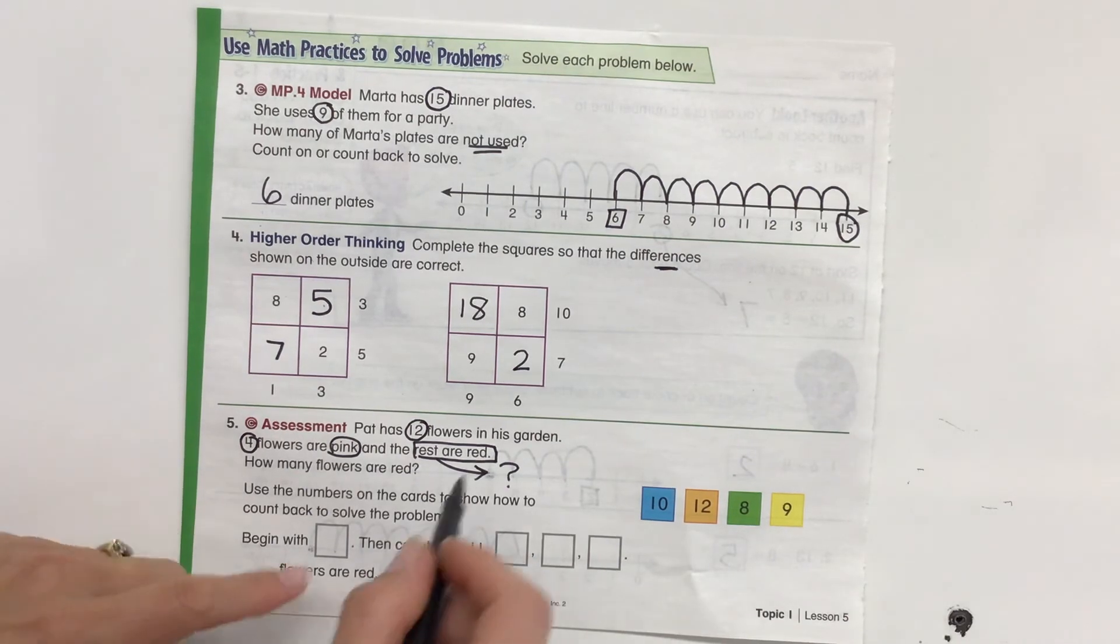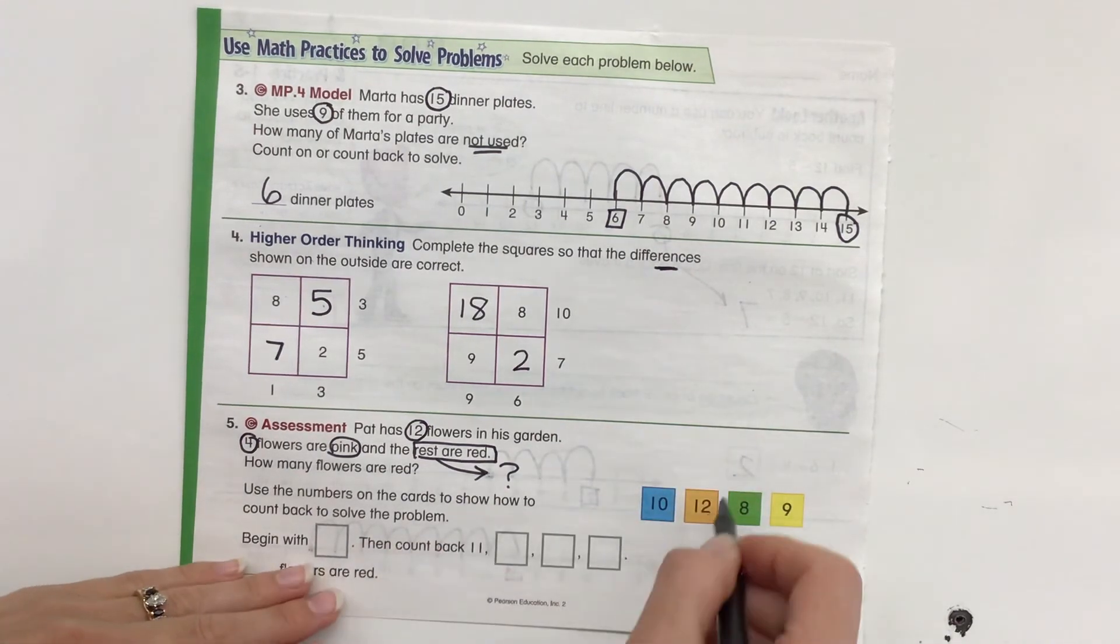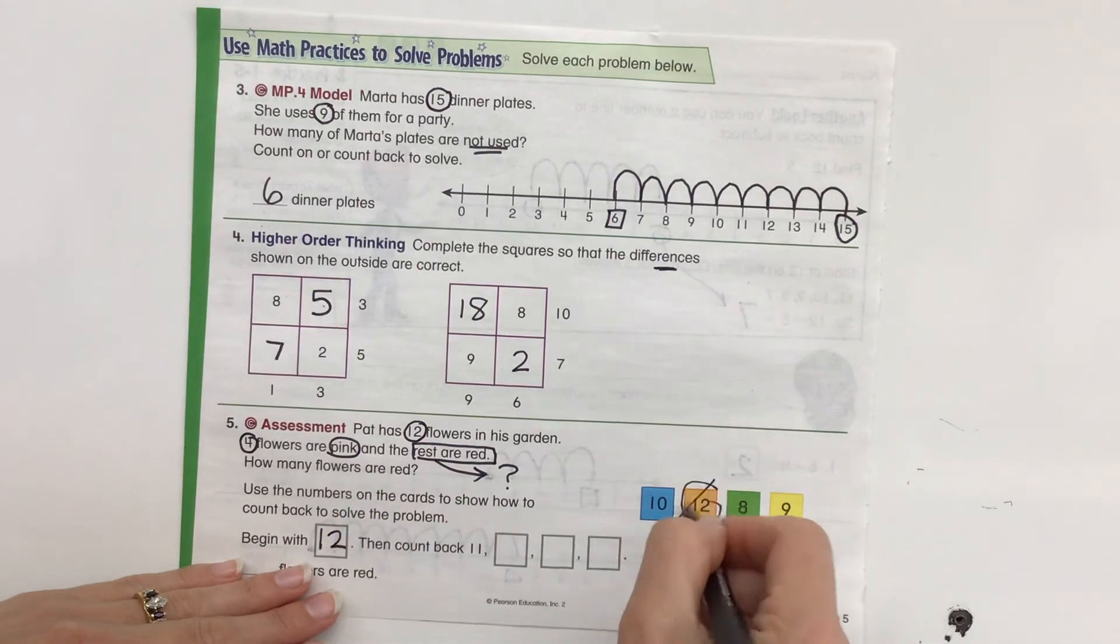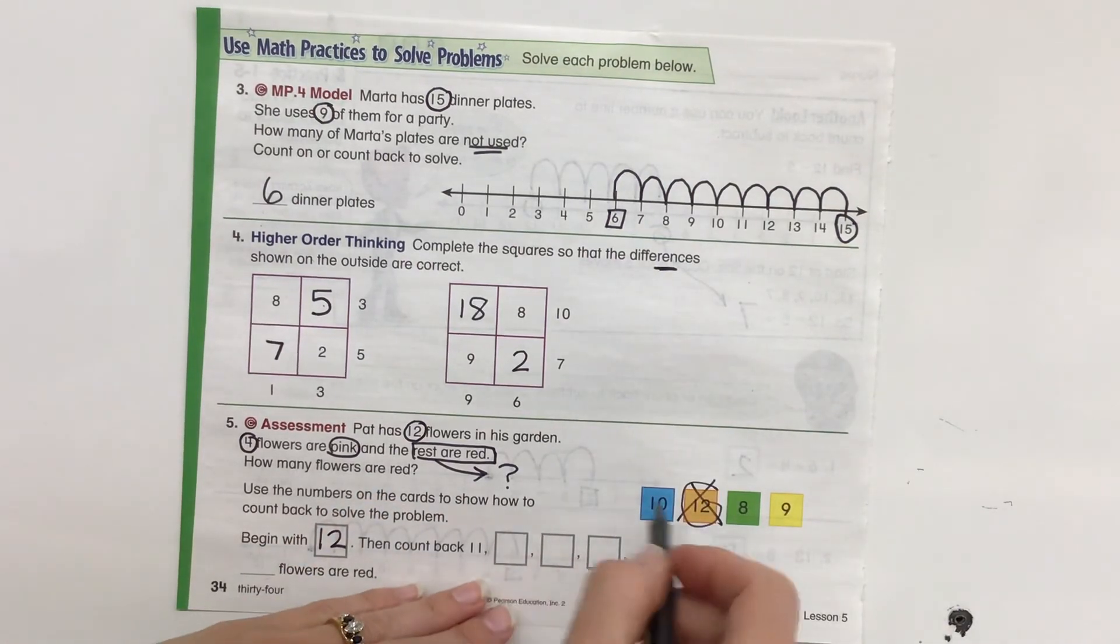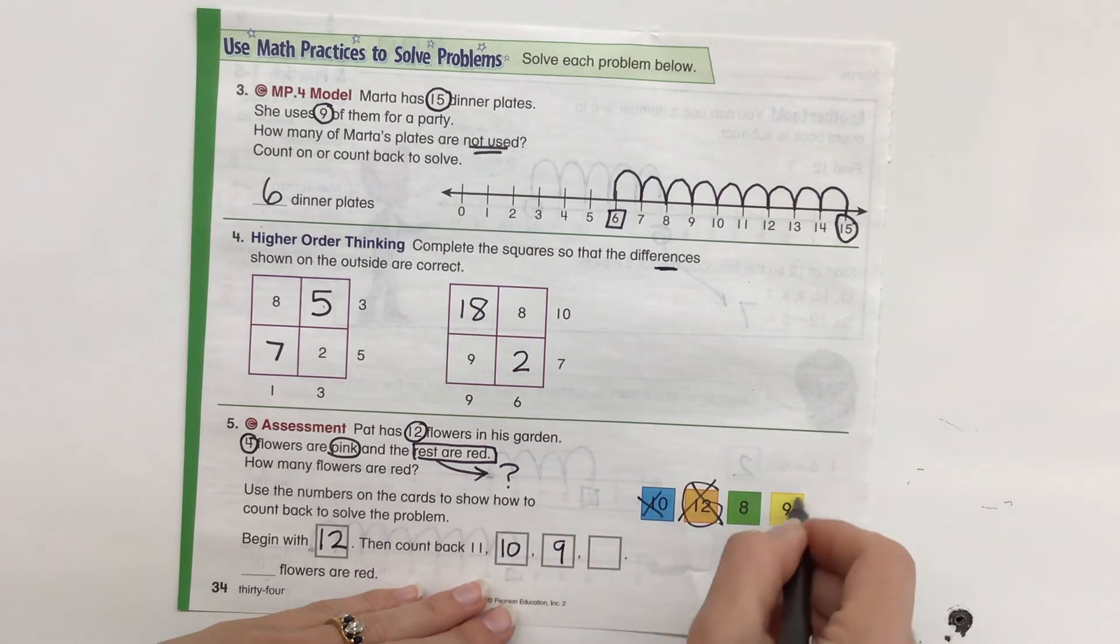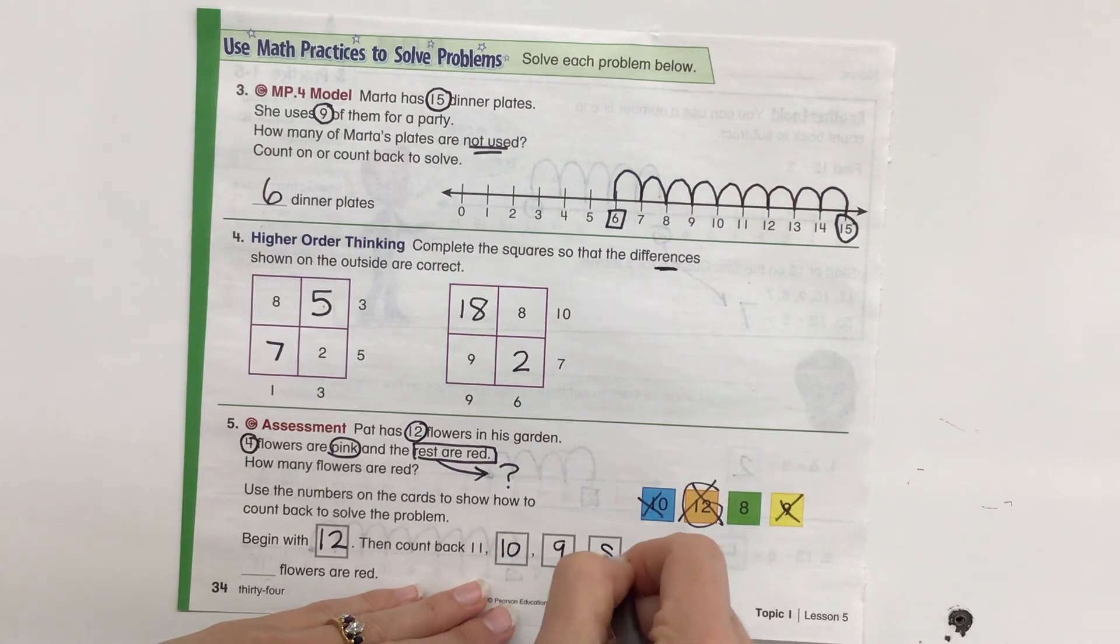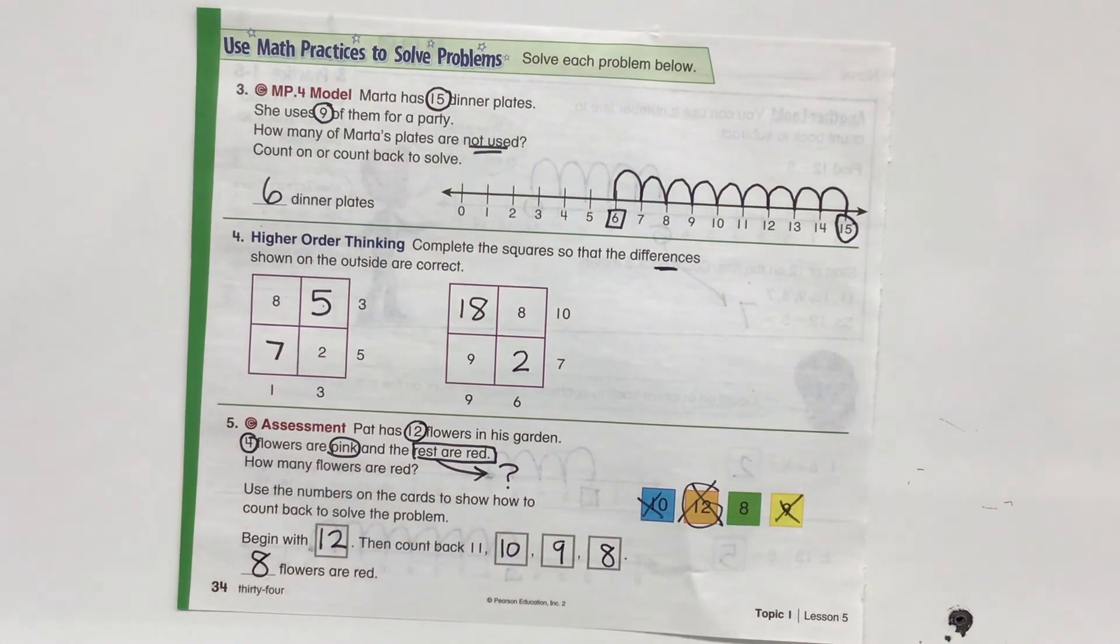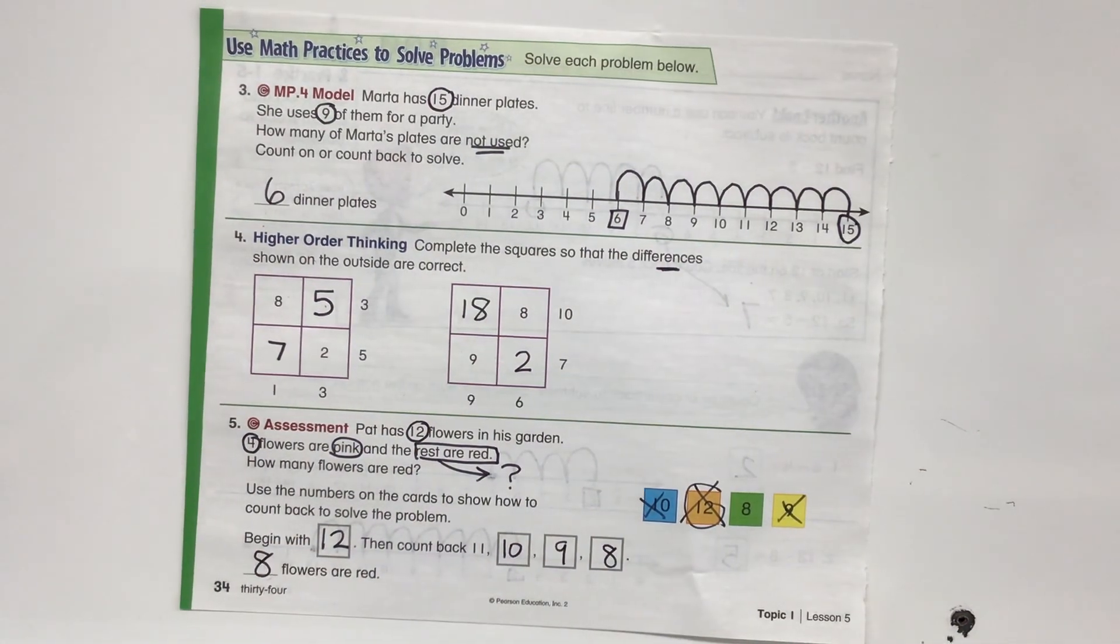So we're counting back on this one. So it's just like we would do on a number line. So we're going to begin with 12. And then we're going to count back. 11, 10, 9, 8. So we know that 8 flowers are red. Excellent job, everybody.